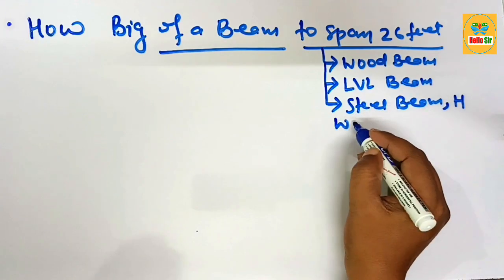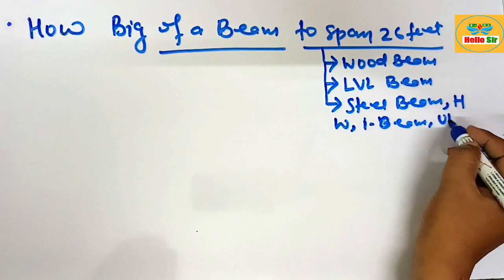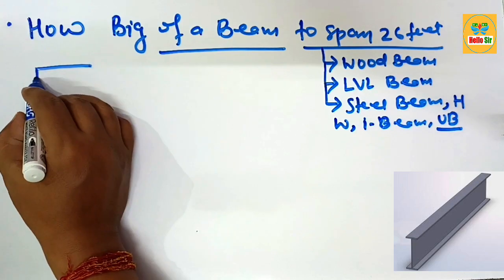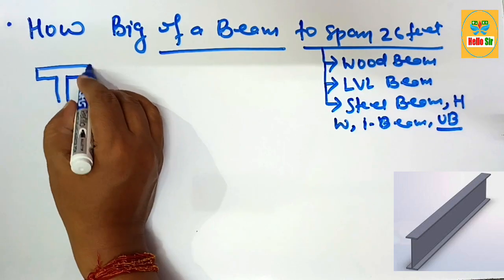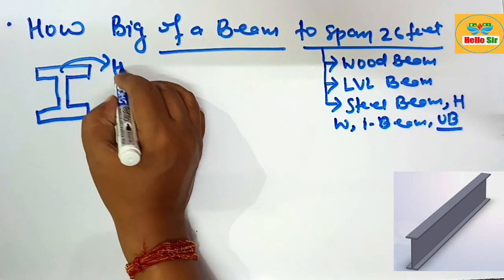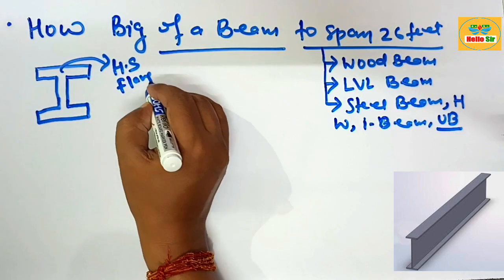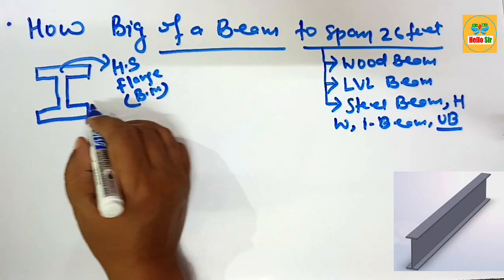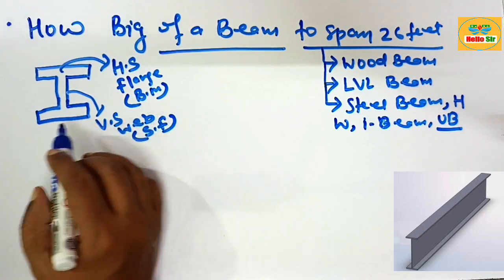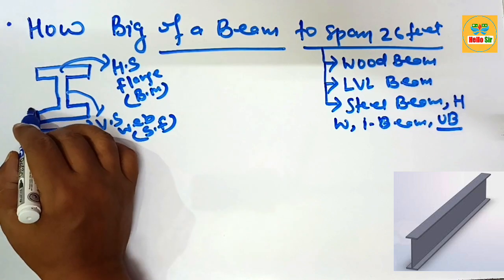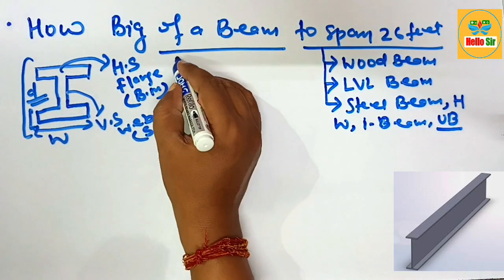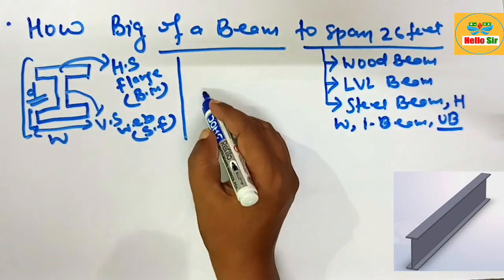Steel beams are also known as H-beam, W-beam, I-beam, and universal beam. Here we make a rough diagram for the American wide flange beam showing the flange and web structure. The horizontal section is the flange, which resists bending moment, and the vertical section is the web, which resists shear forces. The key dimensions are beam width, flange thickness, and section depth.